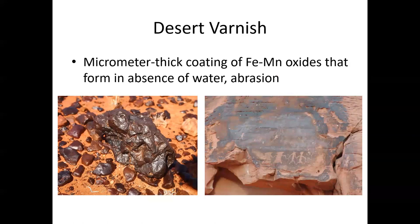Another depositional feature you might see in deserts is desert varnish — a micrometer-thick coating of iron and manganese oxide minerals that form in the absence of water, and most easily in the absence of too much wind abrasion. In protected areas, it forms a dark brown coating on rock surfaces. It's a popular place to find Native American art etched into it, and it persists because there isn't enough water in these deserts to wash it away.